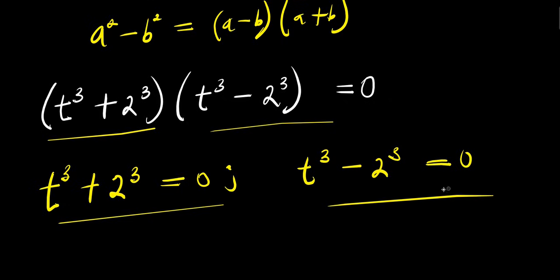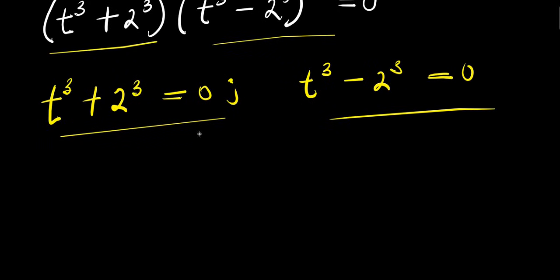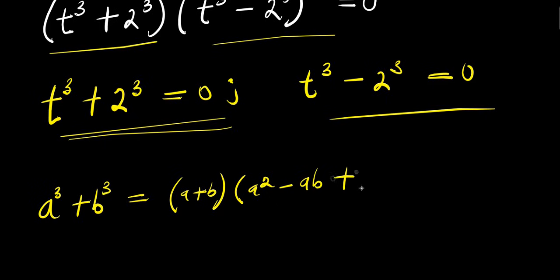Let's solve these individual equations. For the first one, if you have a cubed plus b cubed, this equals a plus b times a squared minus a times b plus b squared. In this case our a is t and b is 2.